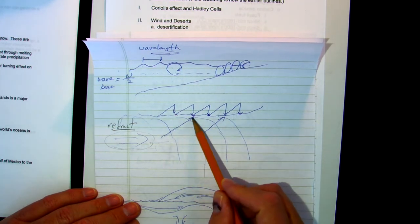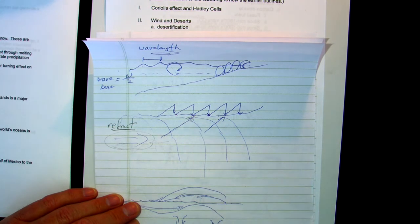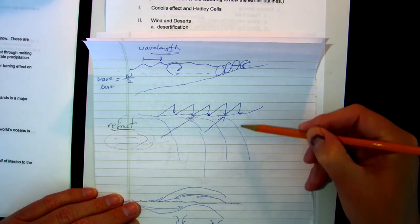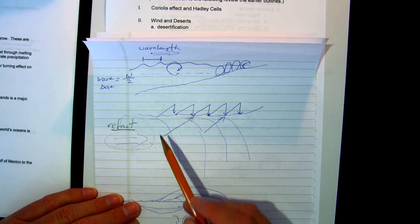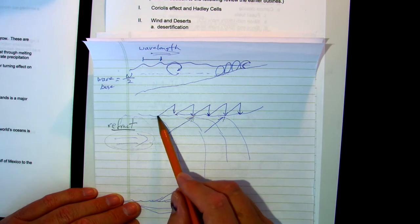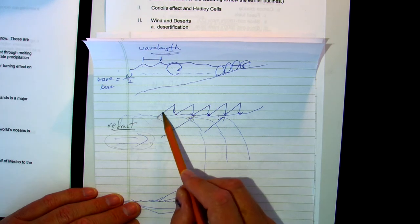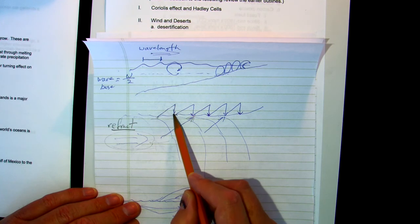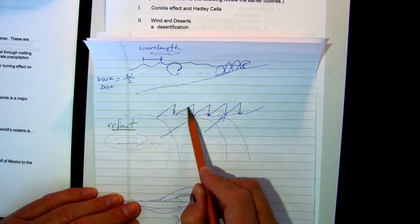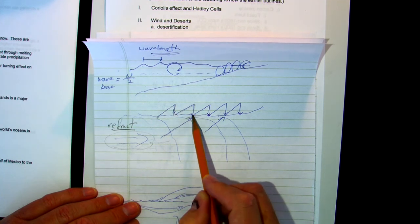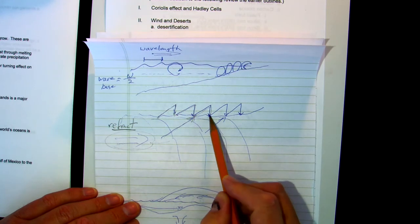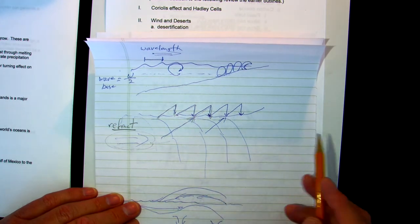You'll notice next time you're on the beach, the waves aren't coming directly in but at an angle. Sand will be picked up by this and move this way, and gravity will pull it straight back down. Picked up this way, pull straight back down. This is how sand moves along the beach.